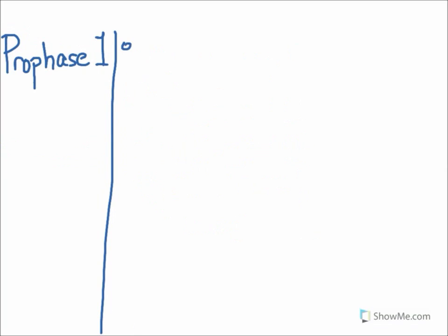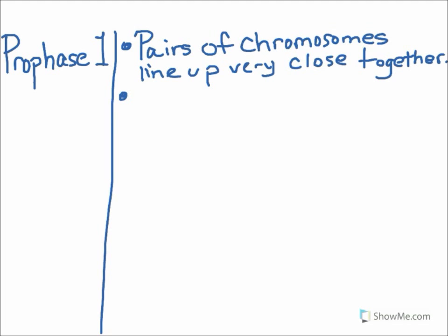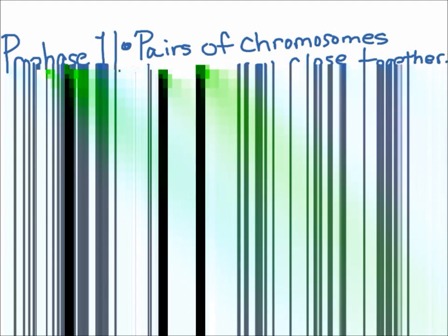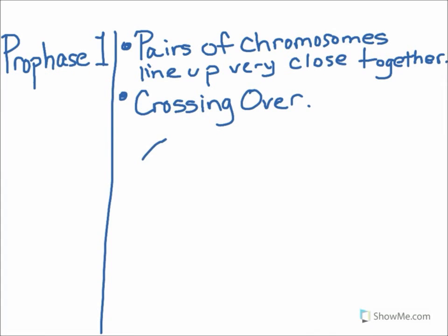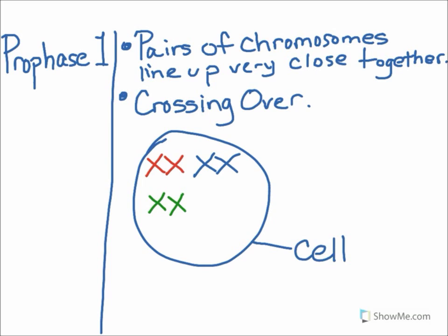In prophase 1, two main things happen. The first is that the pairs of chromosomes line up or pair up together. They get very close together. The second thing that happens is that the chromosomes exchange genes in a random way. This random exchanging of genes is called crossing over. This is what it looks like inside the cell. The tetrads get very close together.